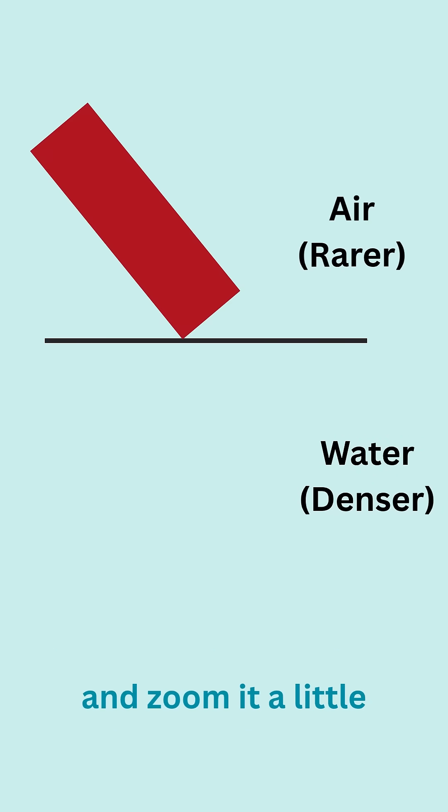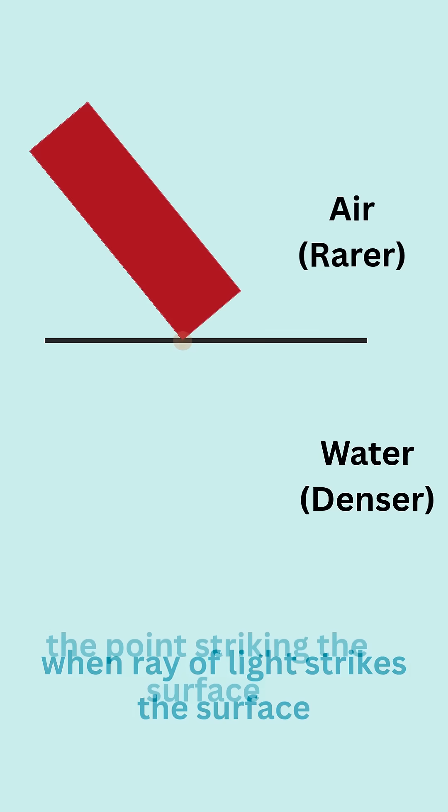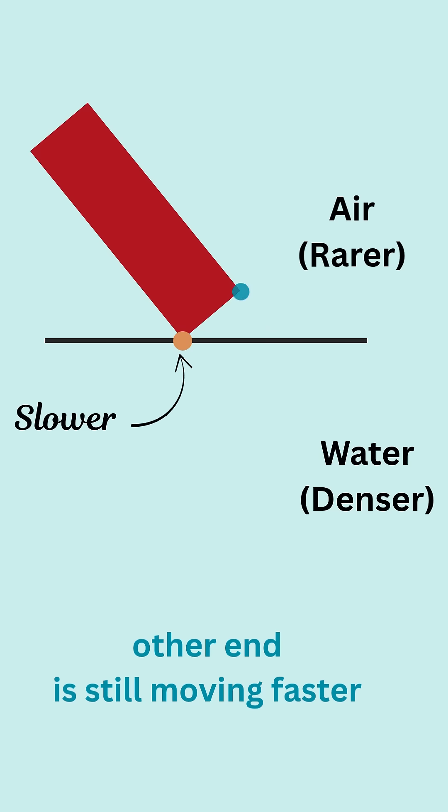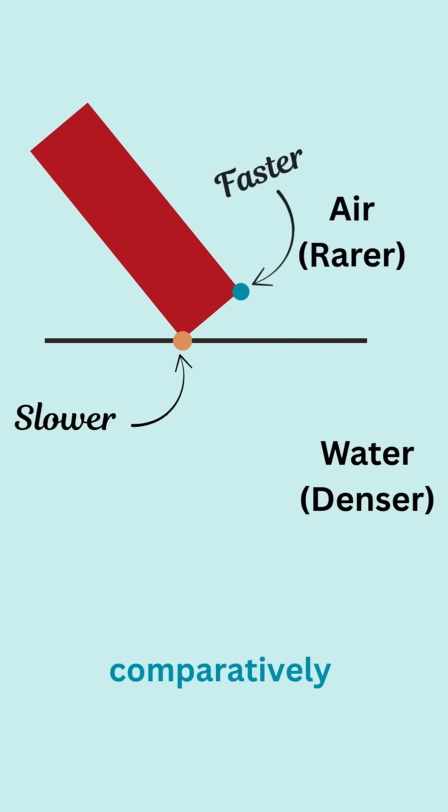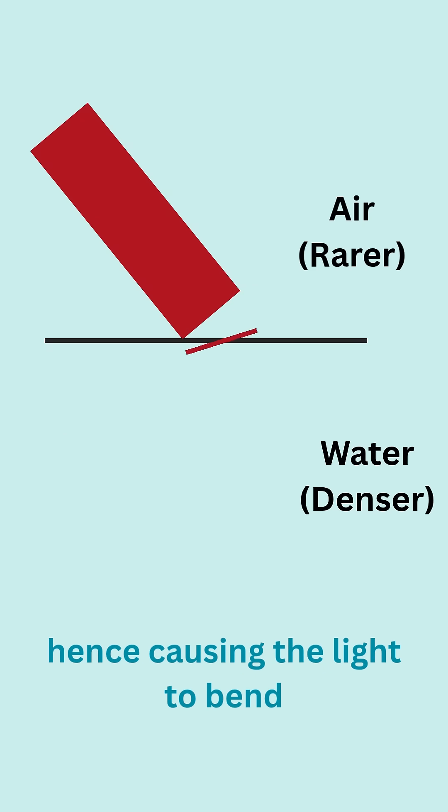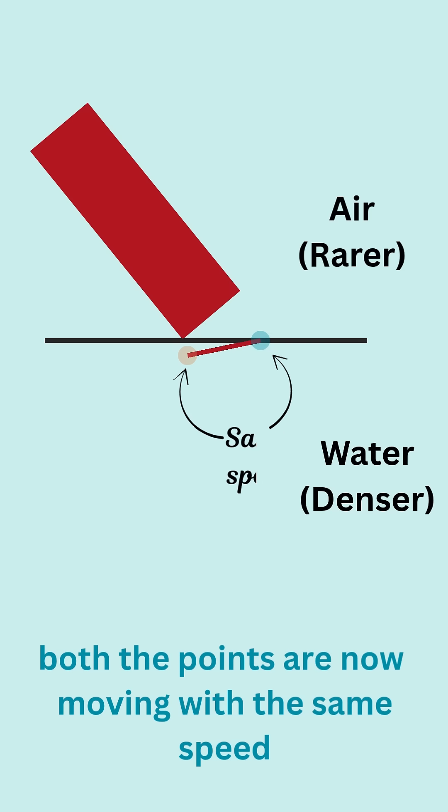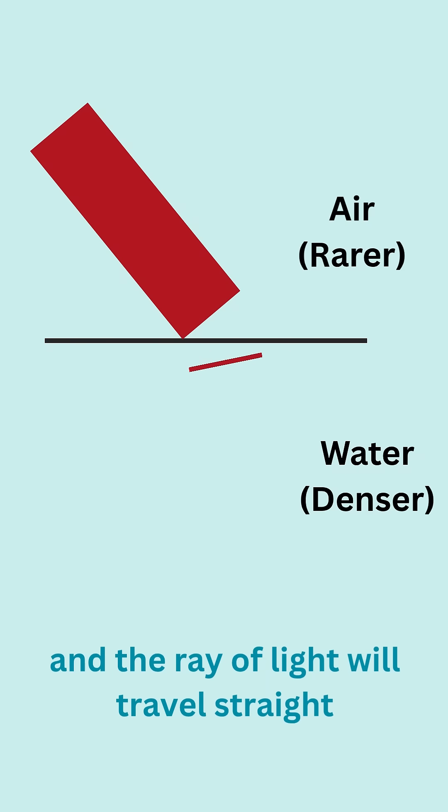Zoom in until when the ray of light strikes the surface. The point striking the surface slows down, but the point at the other end is still moving faster comparatively, hence causing the light to bend. When the other end also strikes the surface, both points are now moving with the same speed and the ray of light will travel straight.